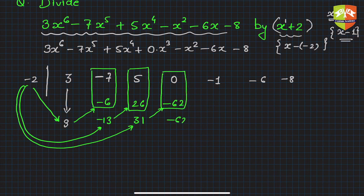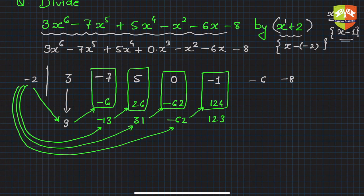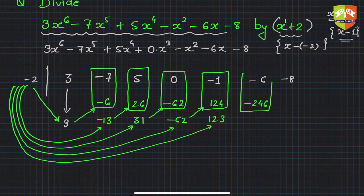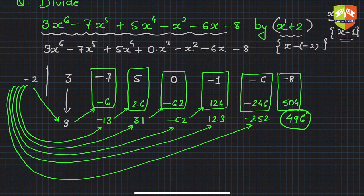Add the column with -62 to get -62 in that position. Multiply -2 times -62 to get 124; write it under the next coefficient and add to get 123. Then multiply -2 times 123 to get -246; add to get -252. One more time: multiply -2 times -252 to get 504; add to get 496.